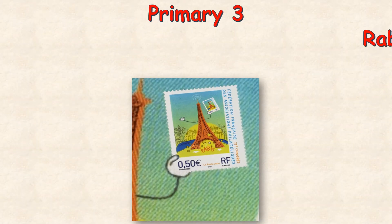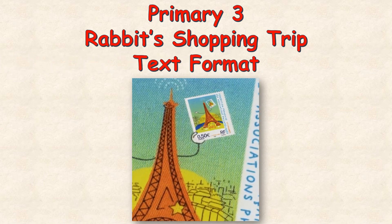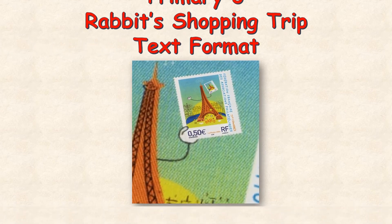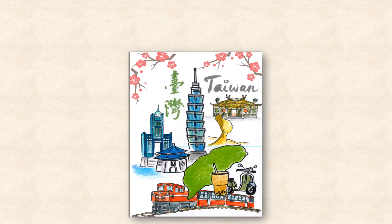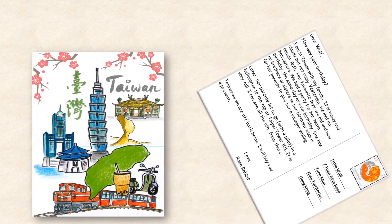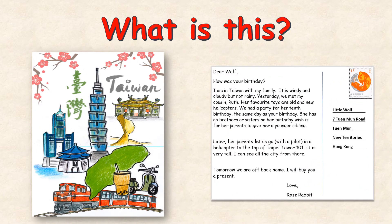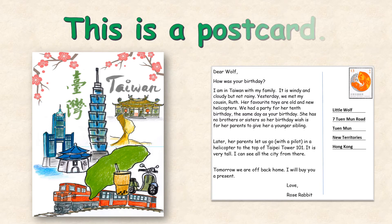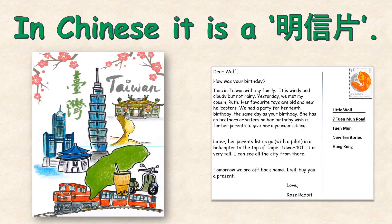Primary Three Rabbit Shopping Trip text format. What is this? This is a postcard. In Chinese it is called a 'ming sun pin'.